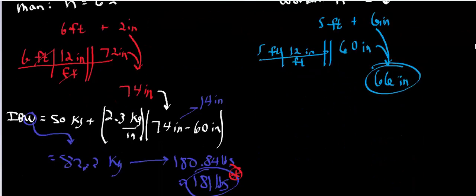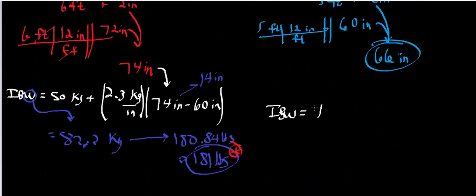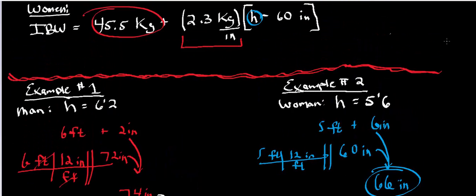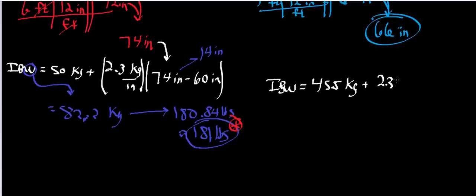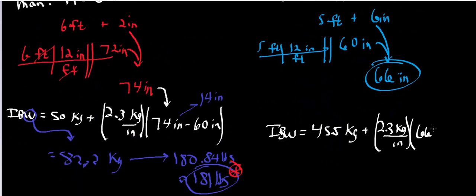Now what we can do is apply the formula. So the ideal body weight for this particular woman, who's 5'6", we're going to take this initial constant, but notice it's no longer 50, it's 45.5. So this is 45.5 kilograms plus this multiplier out in front: 2.3 kilograms per inch is the same. Then we're going to multiply it times every inch in excess of 5 feet or 60 inches. So H minus 60, H is 66, this is going to be 66 inches minus 60 inches. And I can very quickly see that this difference inside the parentheses is actually going to be 6 inches.